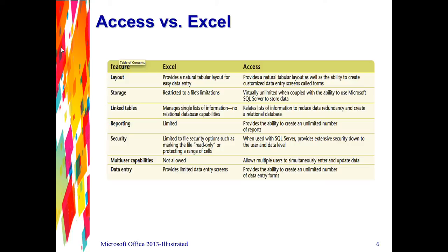With storage, Excel is restricted to the file's cell limitation — there are only a certain number of cells it can contain. With Access, storage is virtually unlimited when you couple it with the ability to use things such as Microsoft SQL Server to store data. With linked tables, in Excel you can only manage single lists of information and can't tie them together. In Access, you can have two different tables and relate them together to reduce redundancy of data in the relational database.